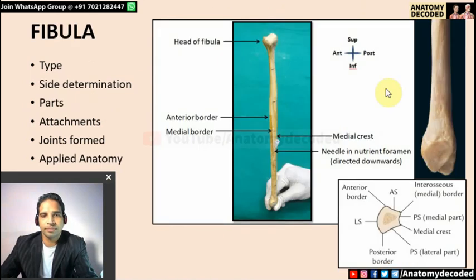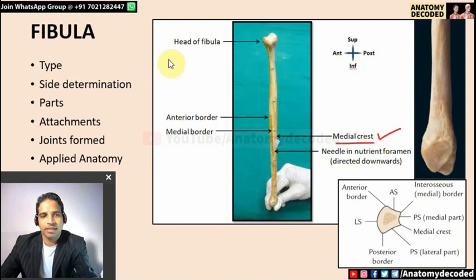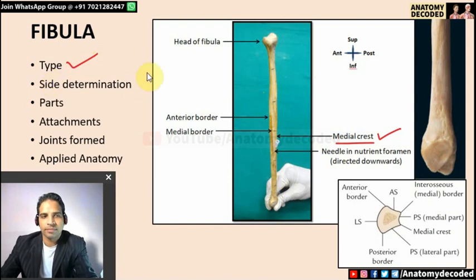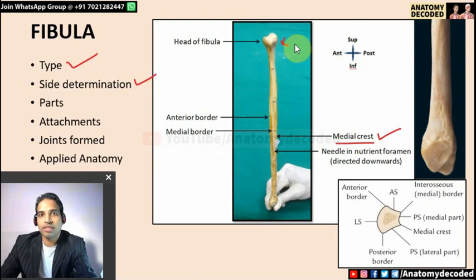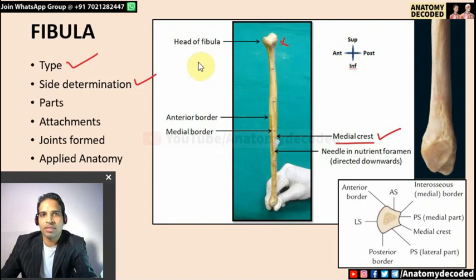Now let's see the fibula bone. Students consider it one of the most difficult bones, but once you understand the medial crest, the borders and surfaces become clear. Fibula is a typical long bone with upper end, shaft, and lower end. For side determination: the head is on the superior aspect. The malleolar fossa covers all three dimensions — it is inferior, posterior, and facing medially.